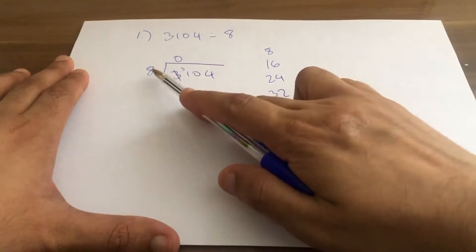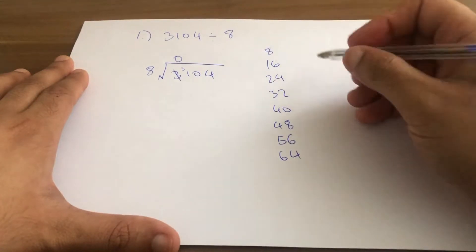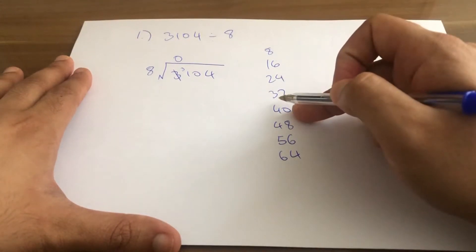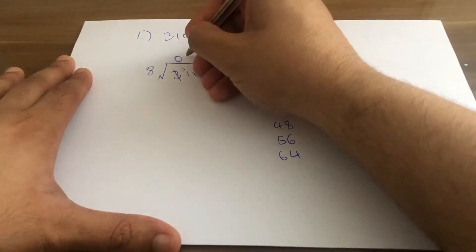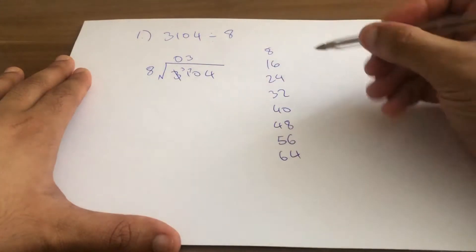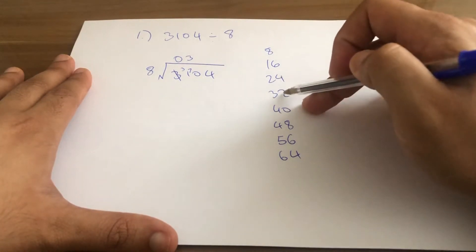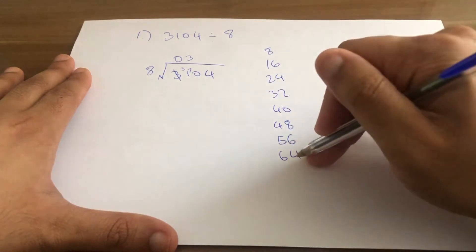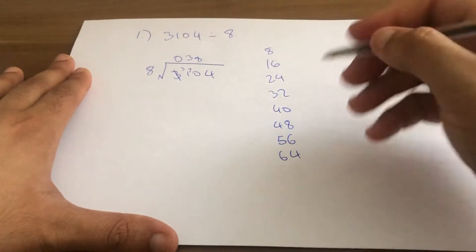So 8 goes into 31 three times with a remainder. What is the remainder? 7. So we know it's 3 remainder 7. How many times does 8 go into 70? 1, 2, 3, 4, 5, 6, 7, 8. So that's 8 remainder 6.